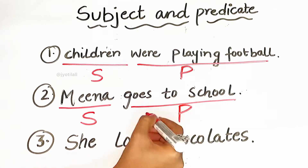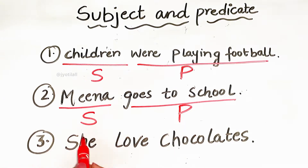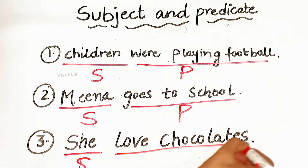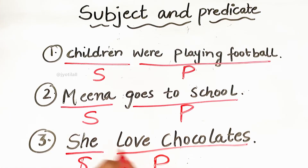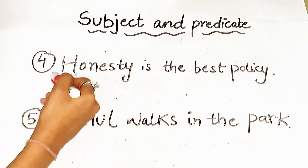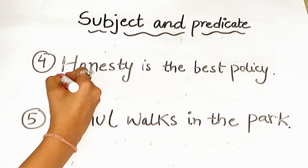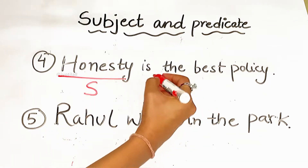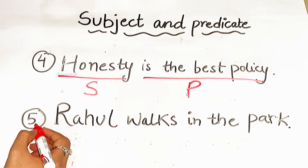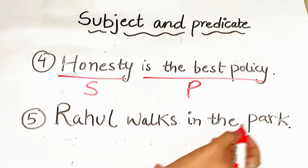Next: 'She loves chocolates.' Who loves chocolates? She. So 'she' is the subject, and 'loves chocolates' is the predicate. Next: 'Honesty is the best policy.' 'Honesty' is the subject, and 'is the best policy' is the predicate.